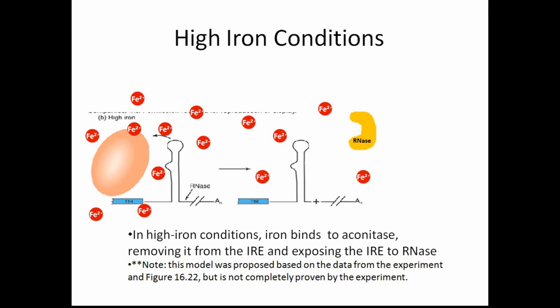In iron-rich conditions, the cell needs to be producing less TFR, and thus the mRNA needs to be degraded. When iron levels are high enough, iron will bind to the aconitase protein, and this will cause a conformational change that will remove the aconitase from the IRE, leaving it susceptible to RNase attack and leading to mRNA degradation, causing less TFR to be produced. This model was proposed after the following experiment was done, and the experiment supports the model but does not completely prove it. Further experiments, however, show that the model is correct.